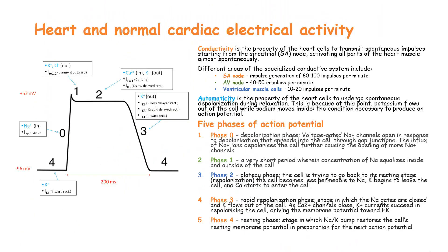We need to understand the terms conductivity and automaticity. Conductivity is the property of the heart cells to transmit spontaneous impulses starting from the sino-atrial node, activating all the heart muscles almost spontaneously. The specialized conductive system includes the sino-atrial node, the atrioventricular node, and ventricular muscle cells. The sino-atrial node generates 60 to 100 impulses per minute, the atrioventricular node generates around 40 to 50 impulses per minute, and ventricular muscle cells generate 10 to 20 impulses per minute.